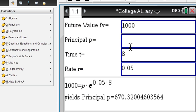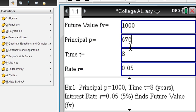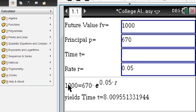If you know your principle, 670, and you want to know the time, then you are leaving the time box blank. And you get your time right here.